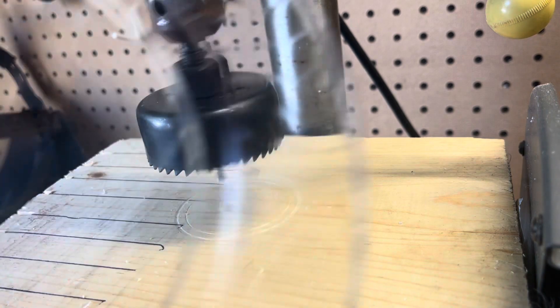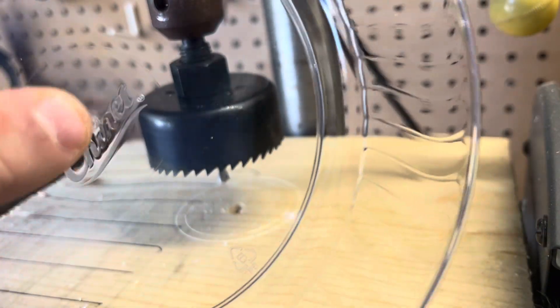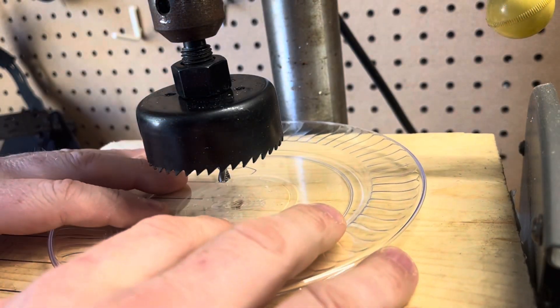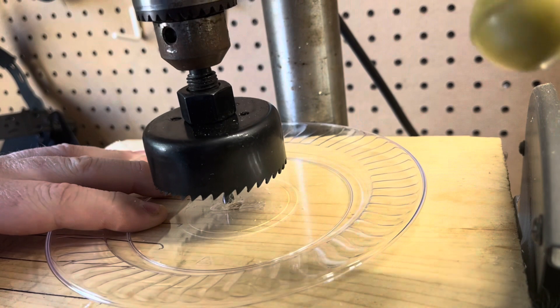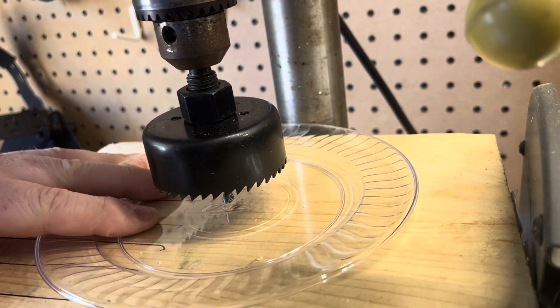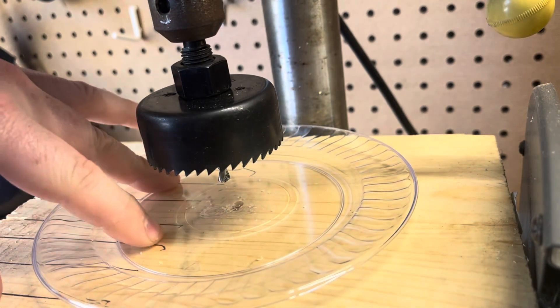When you use your door hole saw, you can see in the middle of the plate that's got a little dot. Stick it to that because that's the center of the plate. Hold the plate down flat like so and put the drill bit that's in the center of the door hole saw in the middle. Don't press hard on it because it will crack it.